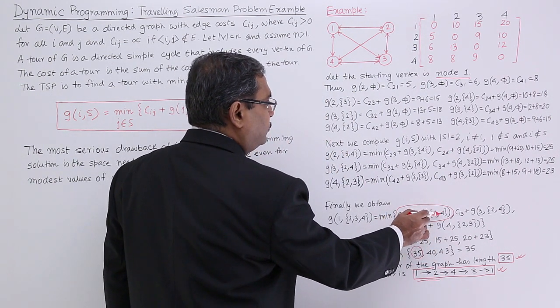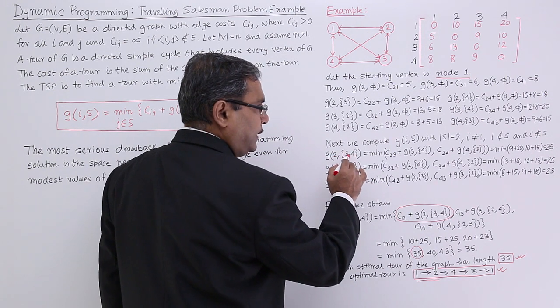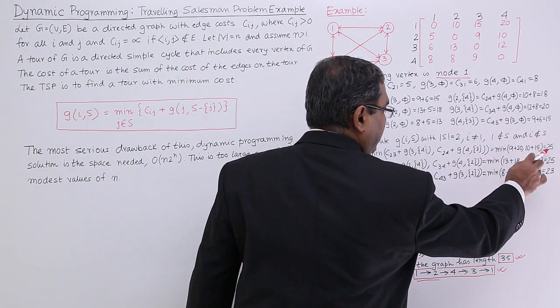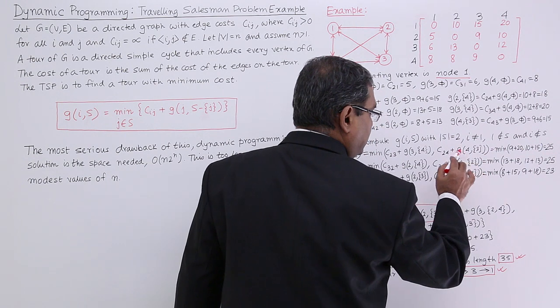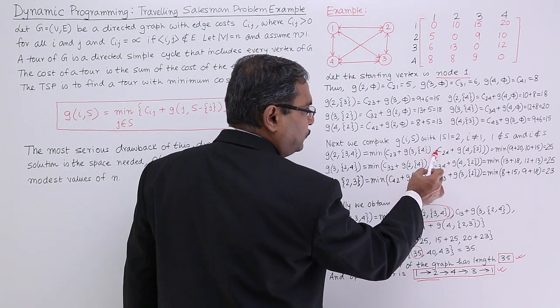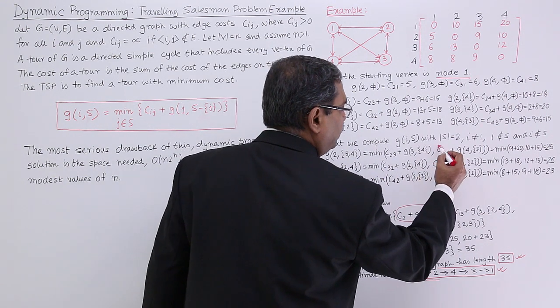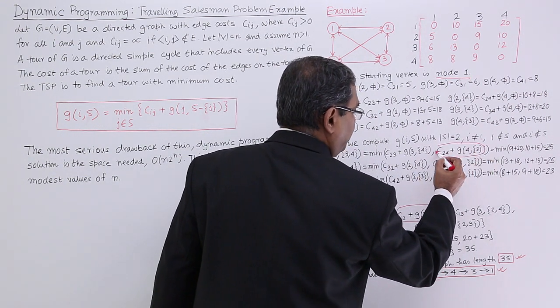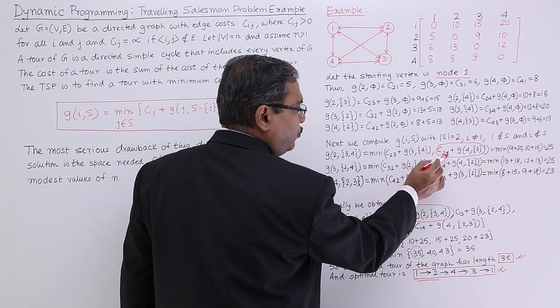Consider this one now. G(2,{3,4}). G(2,{3,4}) means this one. I am getting the answer 25 means this one. That means from 2 I am going to 4. So I am considering this one. That means from 2 I am going to 4.